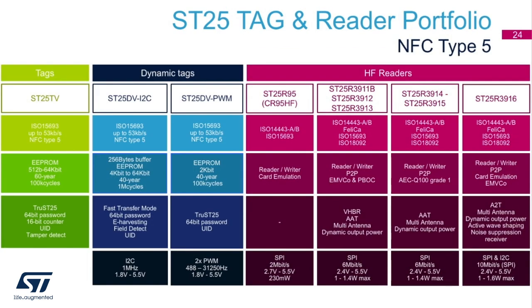ST offers a wide range of solutions for NFC Type 5 technology. The ST25TV tag on the left is an industry leader with features such as the Trust 25 digital signature, tamper detect, and a 64-bit unique ID per device. The ST25DV dynamic tag is a leader with 256-bit buffers that maximize communication speed, industry-leading energy harvesting, and availability in a tiny 1.5 by 1.7 mm wafer level chip scale package.